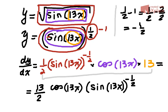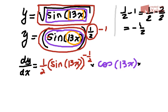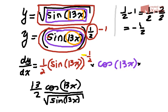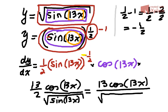If we want, we can simplify a tiny bit further using index rules. We have 13 halves cosine of 13x. Because we have a negative exponent, we can send that whole expression to the bottom — sine of 13x goes on the bottom with a positive exponent of one half. And an exponent of one half is the same as a square root. So the final answer is 13 cosine of 13x all over 2 times the square root of sine of 13x.